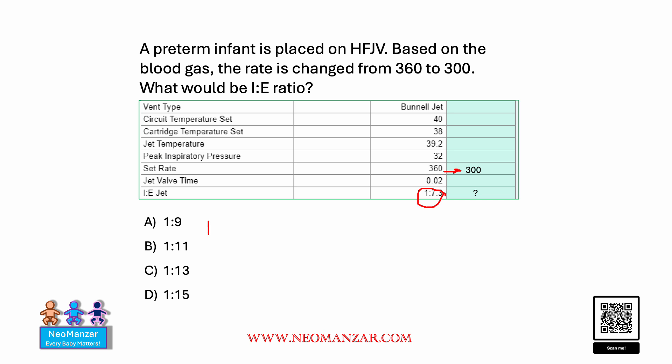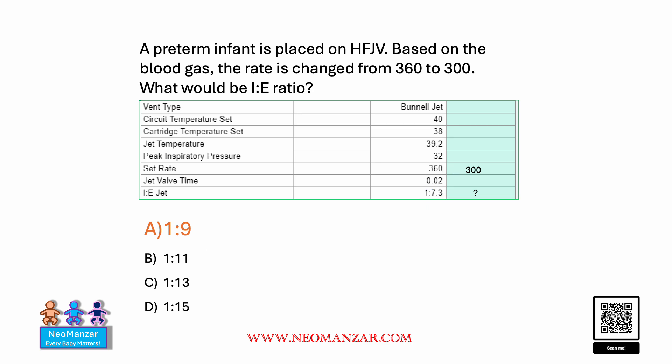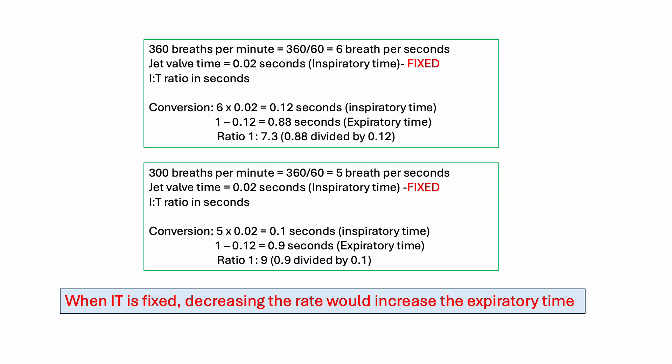You see the answer choices here are in ascending order. The correct choice is 1:9 — that will be the I:E ratio.